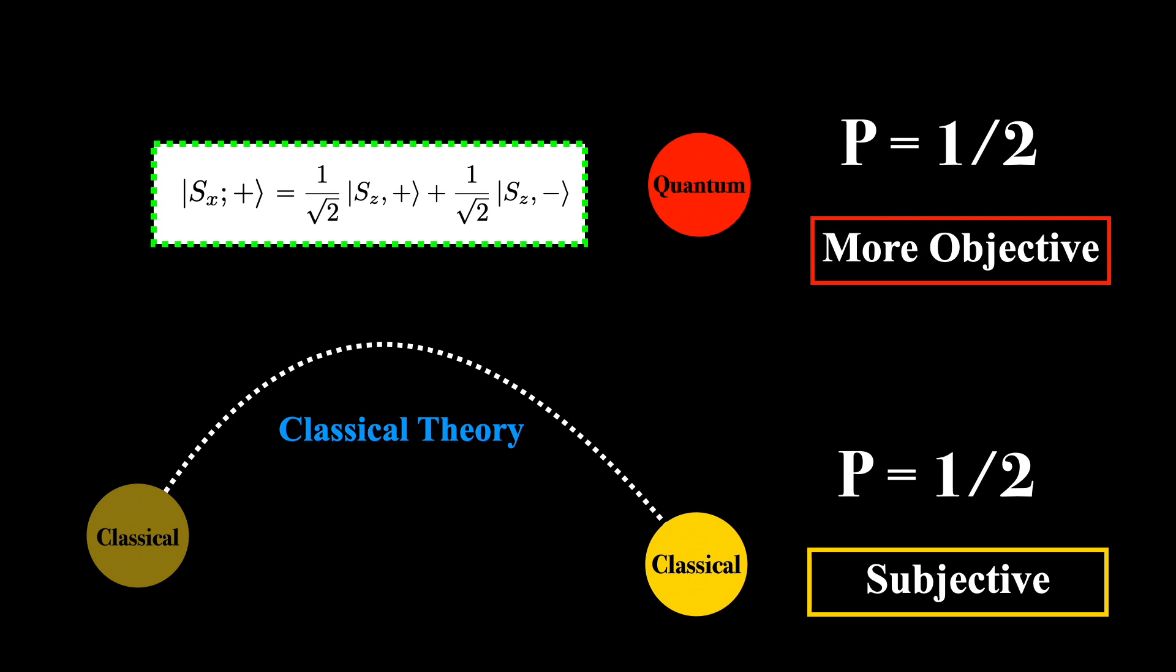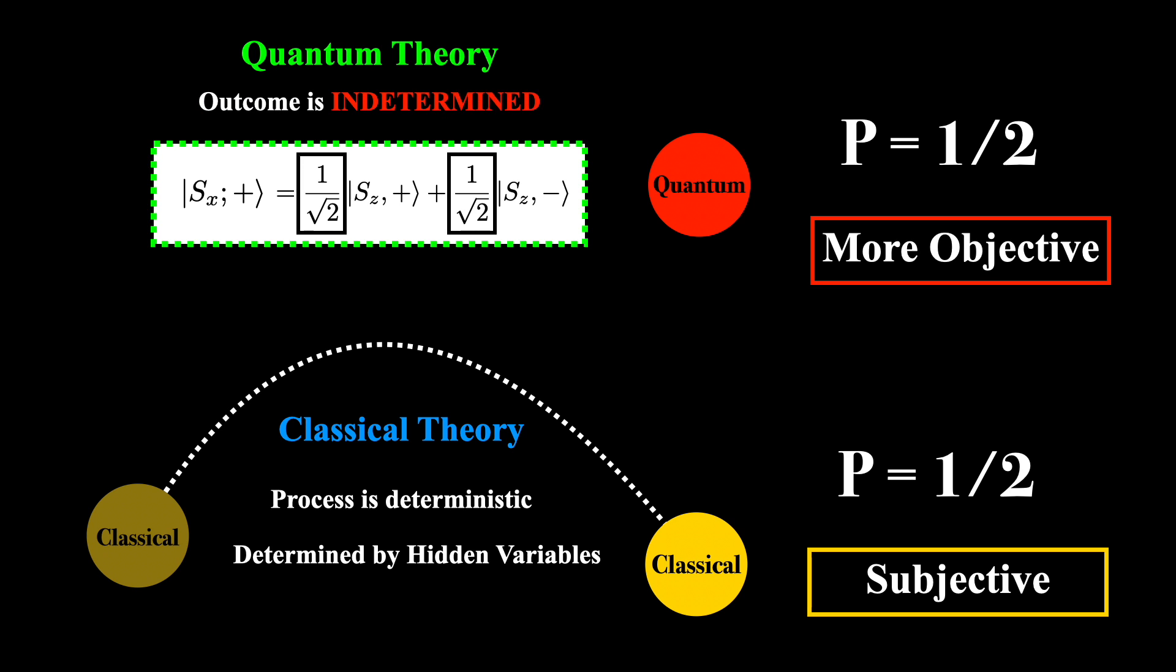With the classical coin, there was no probability in the theory itself. The probability was solely based on our lack of knowledge and according to the theory, the whole process was deterministic and determined by hidden variables. But in quantum theory, the probabilities are built right in, and it is unclear exactly how these probabilities should be interpreted.